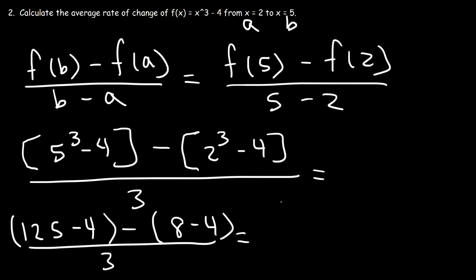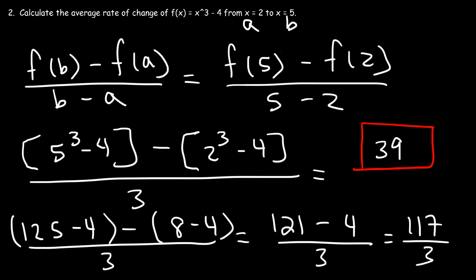125 - 4 is 121. 8 - 4 is 4. And 121 - 4 is 117. So it's 117 divided by 3. And 117 divided by 3 is 39. So 39 is the average rate of change from 2 to 5, or on the interval [2, 5].